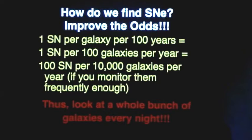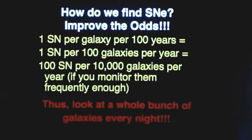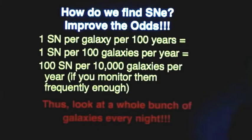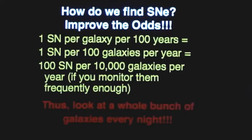But if you start looking at tens of thousands or thousands or tens of thousands of galaxies per night, then you can start building up a good sample of supernova. So the game for supernova discovery is look at as many galaxies every night as possible and try and find that one supernova per century that pops up in one of those thousands and thousands of galaxies. And that's exactly what these supernova searches do.